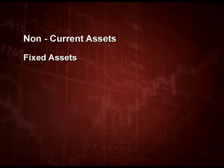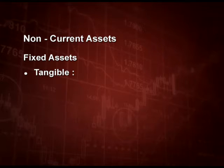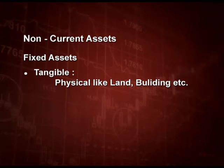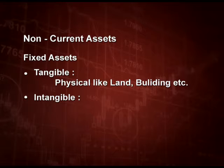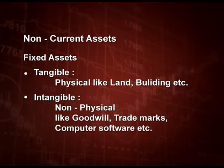Naturally, a non-current asset is one that does not fulfill those current asset conditions. Under non-current assets, fixed assets must detail tangible fixed assets — those that are physical, like land and buildings — and intangible assets, which are non-physical, like goodwill, trademarks, and computer software.